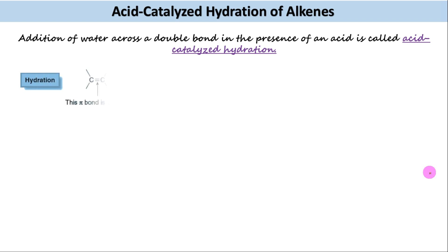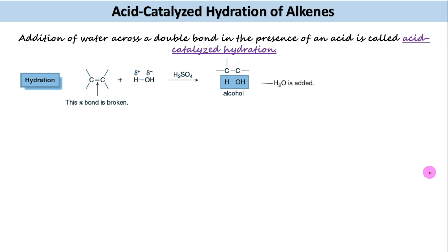For example, when a water molecule is added to an alkene in the presence of acid, what we get is an alcohol molecule in which the water molecule has been added across the carbon-carbon double bond.